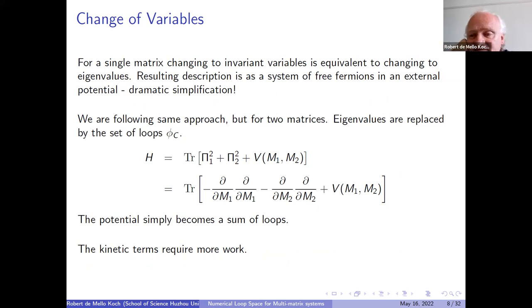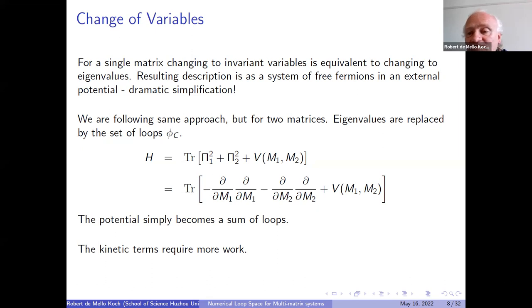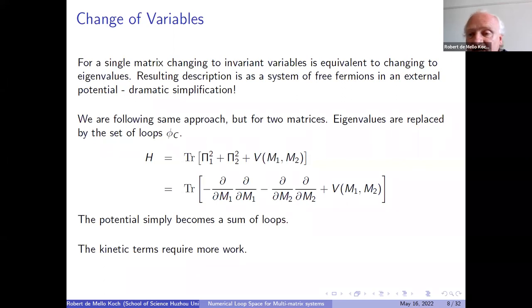Now let's talk about the change of variables. If you are studying a single matrix system and you decided to express things in terms of invariants, the invariants are simply the eigenvalues of the single matrix. It's well known that you can solve the dynamics of single matrix quantum mechanics exactly by changing to eigenvalue variables. In terms of the eigenvalue variables, you have a system of free fermions in an external potential. What we're doing is exactly the same procedure, but now for two matrices, still changing to invariants — the eigenvalues are replaced by the set of loops.